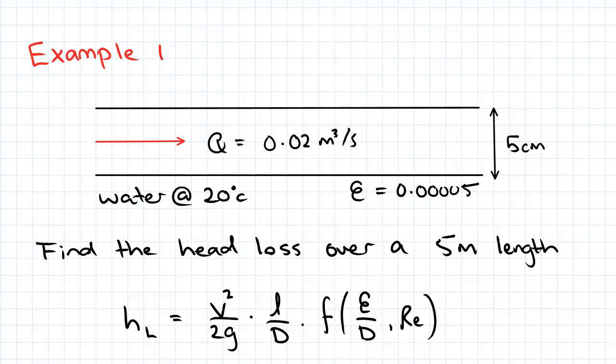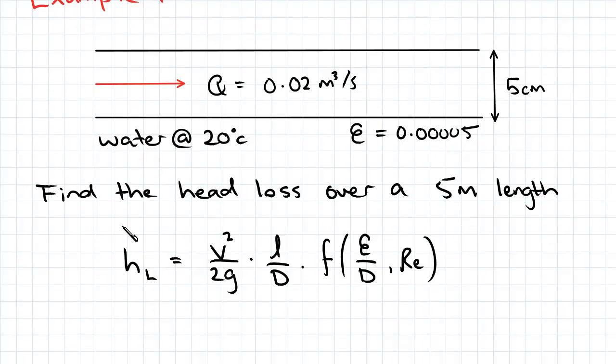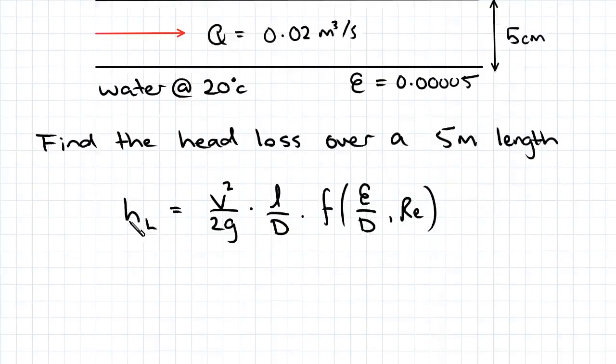We've been given flow rate and diameter, so let's find our velocity. We're just trying to find each of the terms in this equation. We can find our velocity from Q, and Q equals VA.